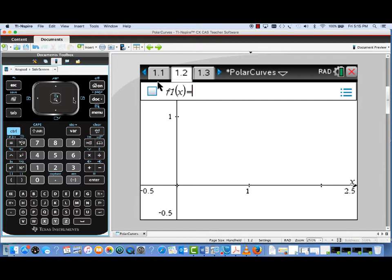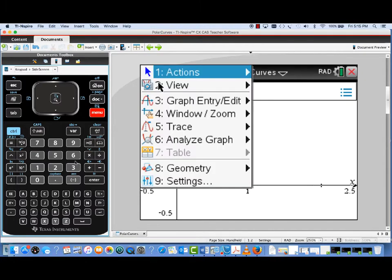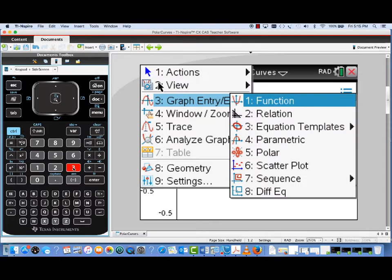We're going to a function graphing window, but we're going to change over to polar. To do that, we'll need to pull up the menu and choose Graph Entry Edit. That's going to let us change the plot type from function to polar, number 5.